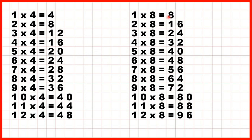Every number in the 8x table — every multiple of 8 — is also a multiple of 4. So 1 times 8 is the same as 2 times 4. 2 times 8 is the same as 4 times 4. 3 times 8 is the same as 6 times 4. 4 times 8 is the same as 8 times 4. 5 times 8 is the same as 10 times 4. 6 times 8 is the same as 12 times 4, because double 6 is 12 and half of 8 is 4. And all of these other numbers in our 8x table would be in our 4x table as well if we kept going past 12 times 4.